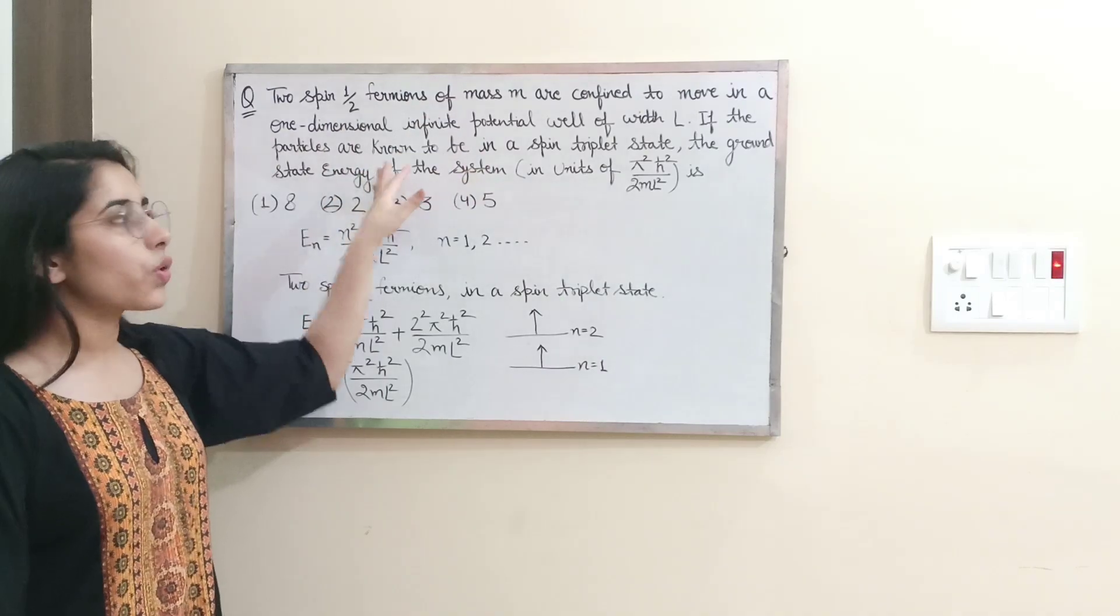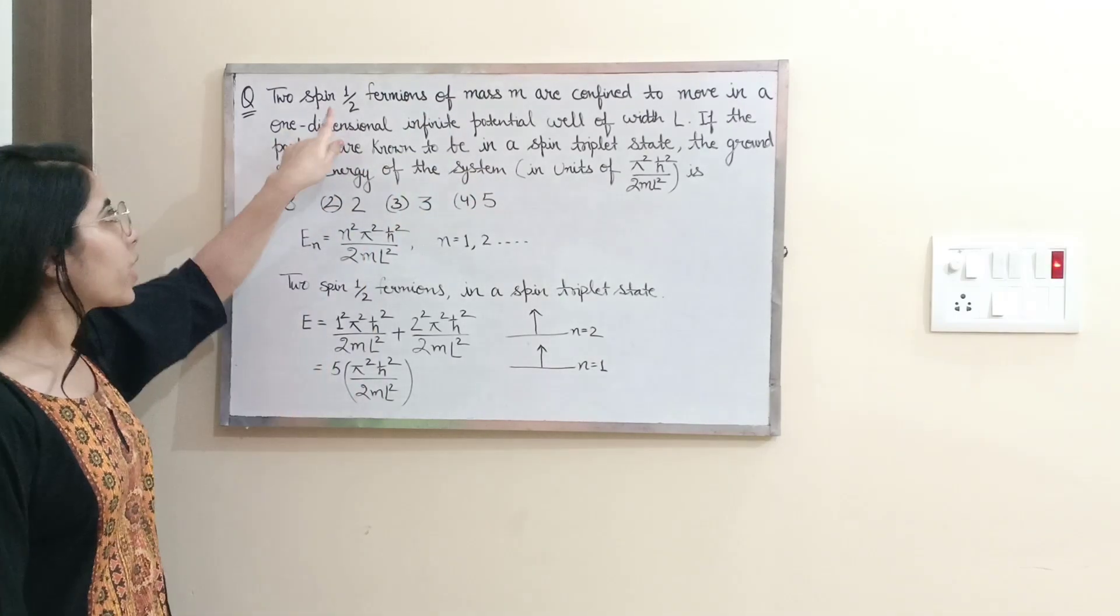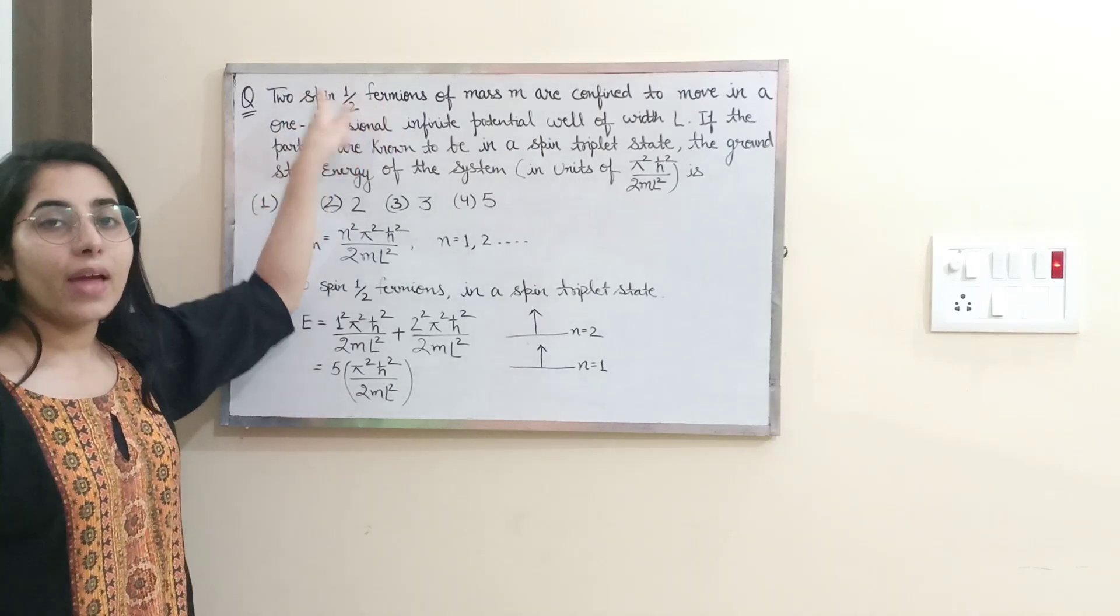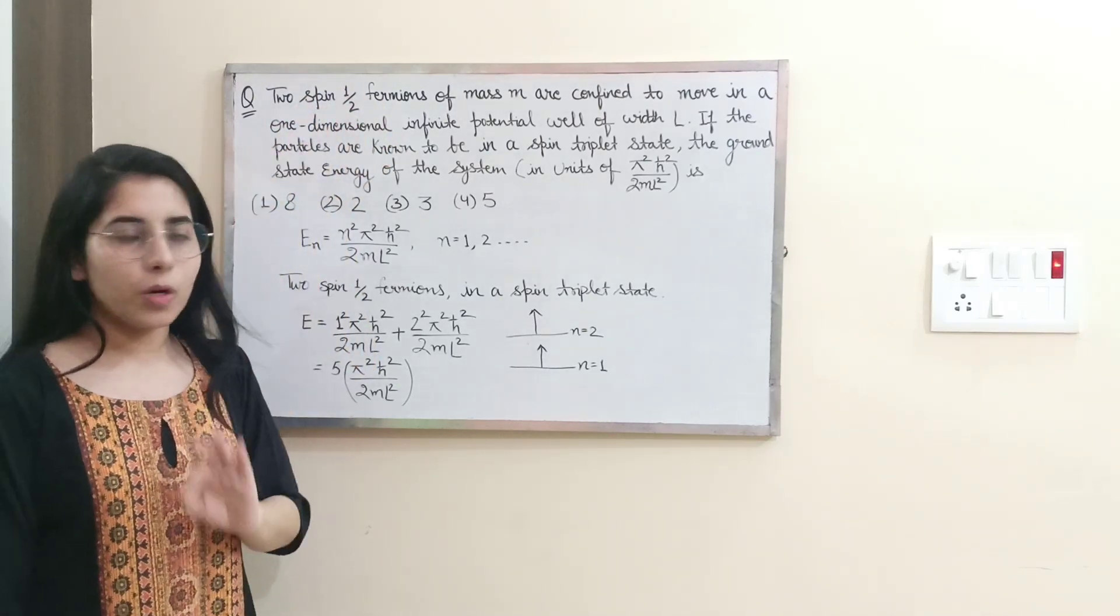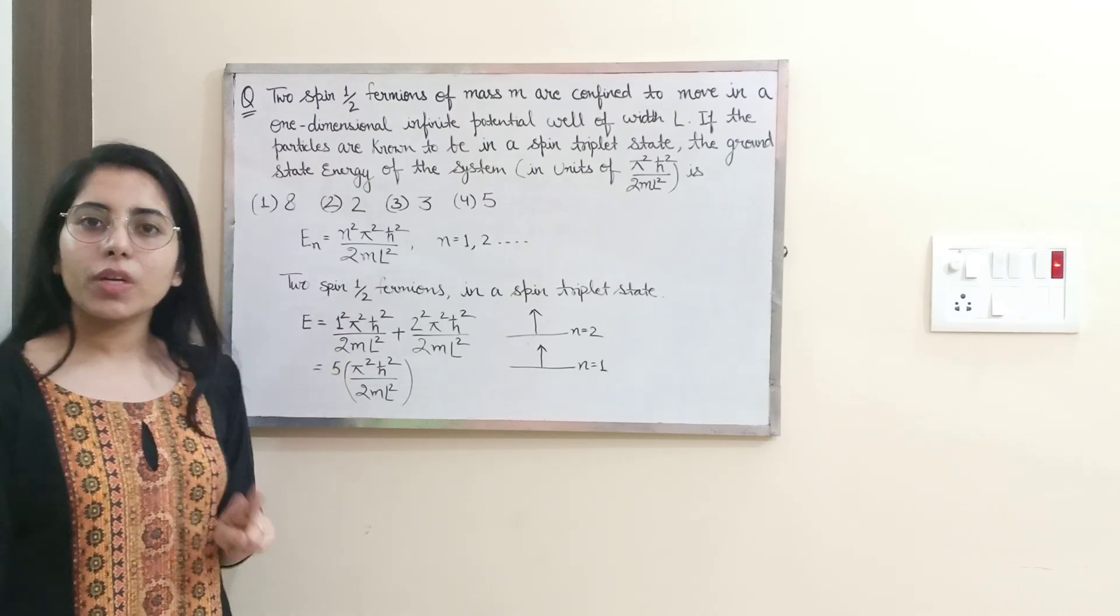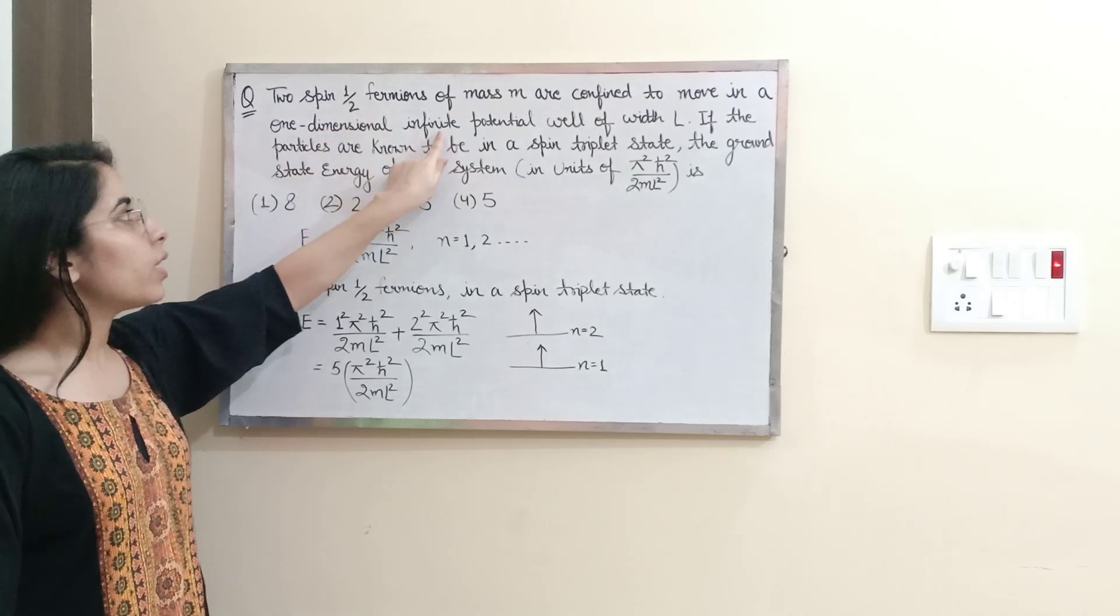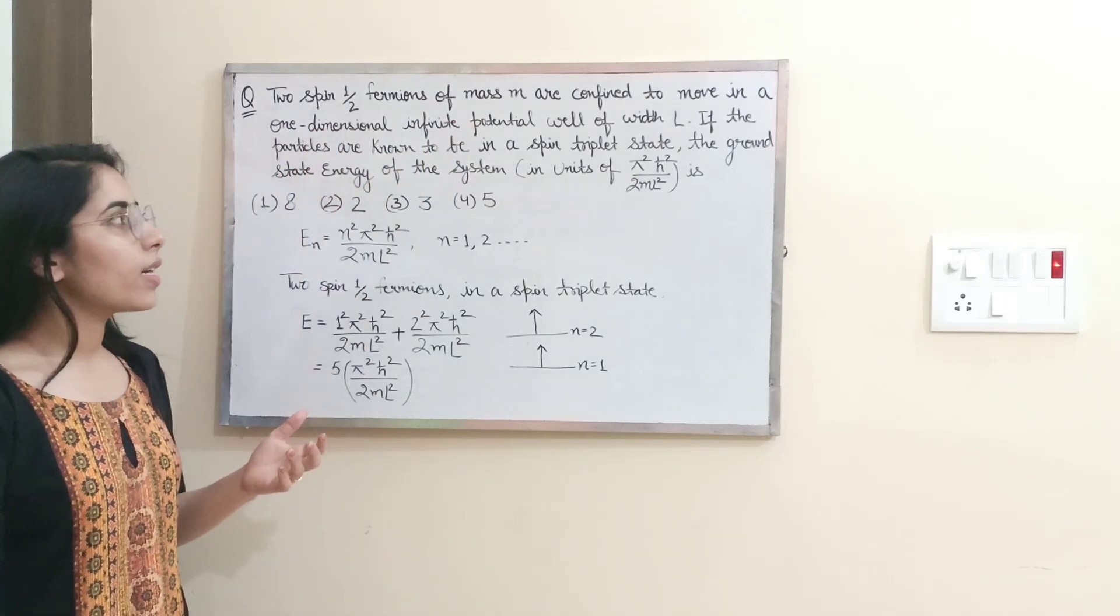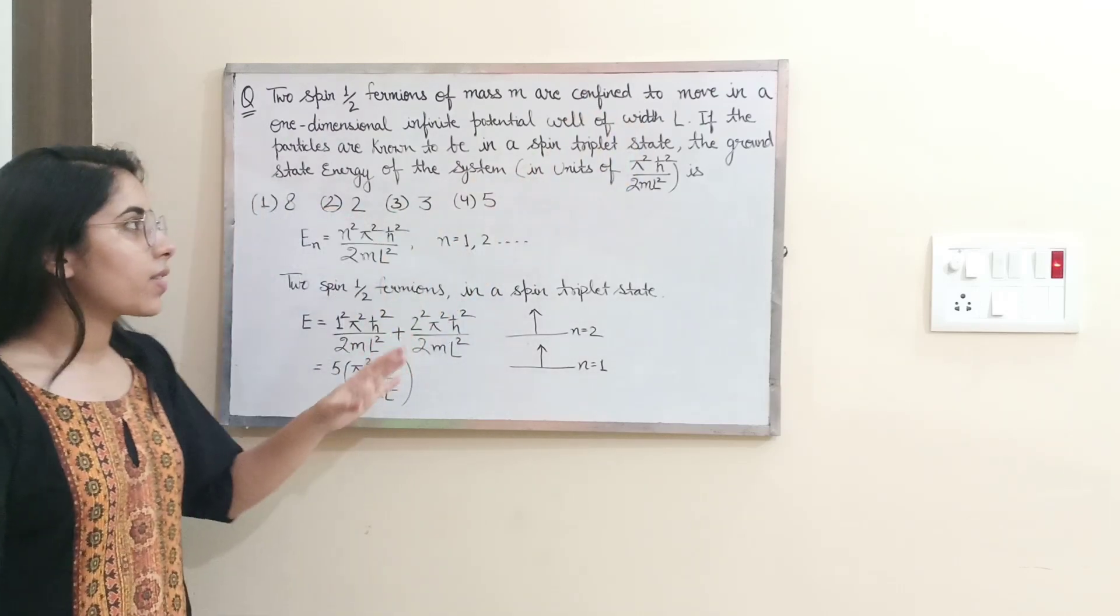In this question the first point on which everybody should focus is we are talking about two fermions and what is the spin for them? Spin half. Two spin half fermions. Second thing we need to focus is the system - one dimensional infinite potential well. The width of the potential well is l.